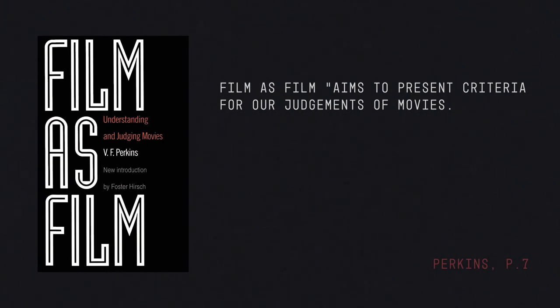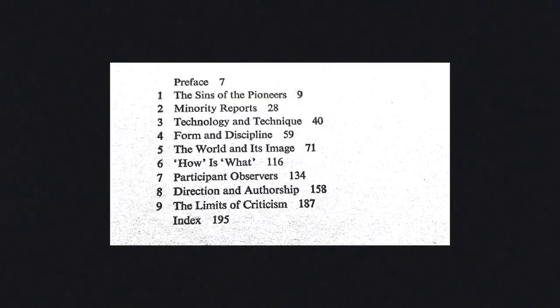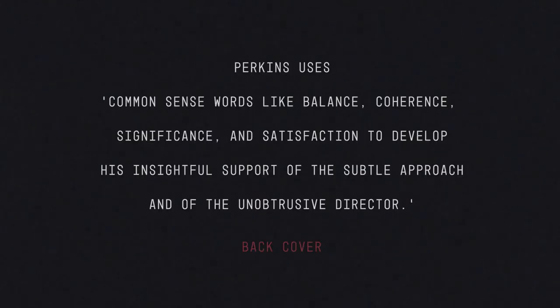Seventh on the list is Film as Film by V.F. Perkins. As Perkins writes, the book aims to present criteria for our judgments of movies. It is written in the belief that film criticism becomes rational, if not objective, when it displays and inspects the nature of its evidence and the basis of its arguments. Perkins writes in a style that is accessible and avoids unnecessary jargon where possible. Like the previous two books, Perkins provides an introduction to film theory that resists a reductive chronology of theoretical movements and instead arranges chapters that confront the aspects of cinema that have inspired continual discussion. Using common sense words like balance, coherence, significance and satisfaction, the book touches on topics ranging from authorship to the relationship between form and content, and concludes with a chapter that discusses the limits of criticism.